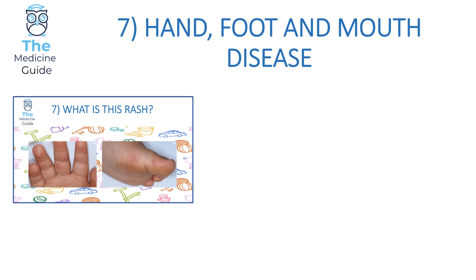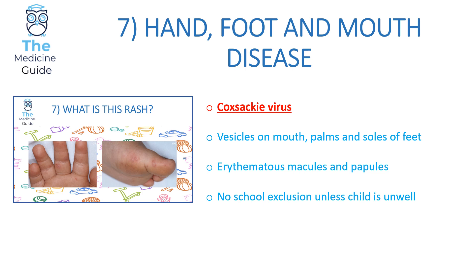Rash 7 is hand, foot and mouth disease, caused by the Coxsackie virus. It presents with vesicles found on the mouth, palms and soles of the feet, and can also present as an erythematous macular and papular rash. An important point for exams: children with hand, foot and mouth disease do not need to be excluded from school unless the child themselves feels unwell.